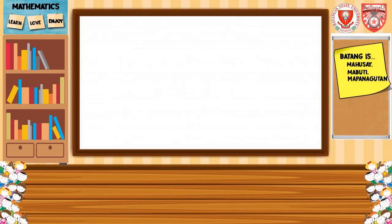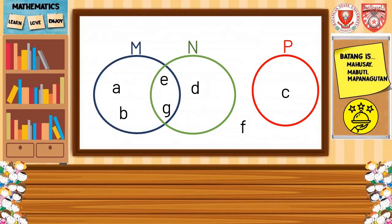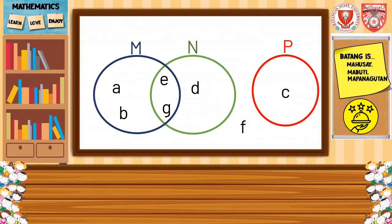Let us try to answer the given activity. The universal set is {A, B, C, D, E, F, G}. We're going to find the complement of M. We remove all the elements in M; all remaining elements in the universal set will be the complement of M. Therefore, the complement of M equals {C, D, F}. Using the same given, we find the complement of P. We remove all the elements in P; the remaining elements give the complement of P, which is {A, B, D, E, F, G}.